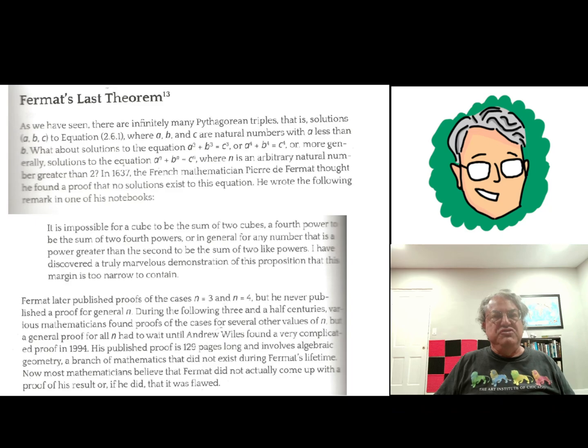or a to the fifth plus b to the fifth equals c to the fifth, any integer, any exponent n, such that a to the n plus b to the n equals c to the n, if n is greater than two, he claimed that there's no solutions for integers a, b, c, as long as that exponent n is fixed. And he said he had a proof, but he said he didn't have enough room to write it down.